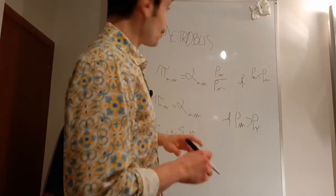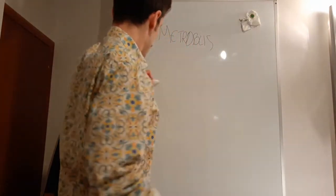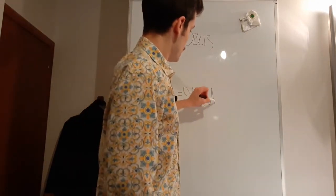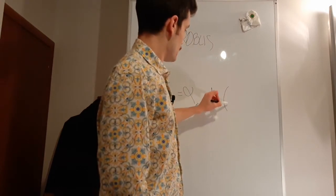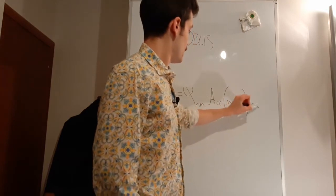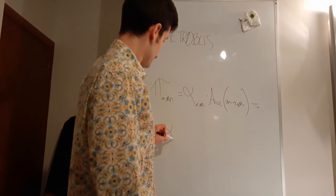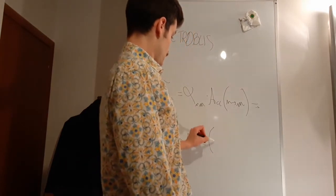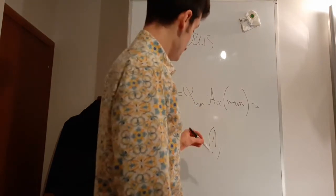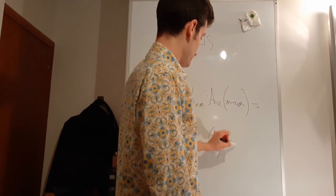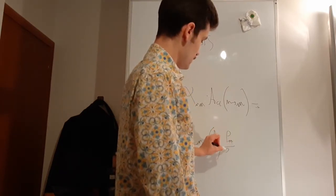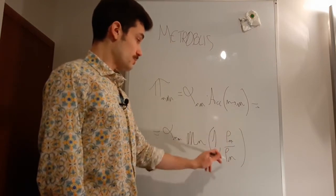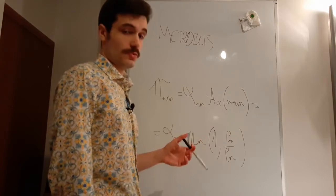To write it in a shorter way, we could say that pi_{nm} equals alpha_{nm} times the acceptance of going from n to m. The acceptance A(n,m) is expressed quite easily: it's the minimum between 1 — because a probability can never be greater than one — and rho_m over rho_n, the arrival state divided by the starting state. So if rho_m is smaller than rho_n, we consider this ratio. Otherwise, we consider one, so the move is accepted.